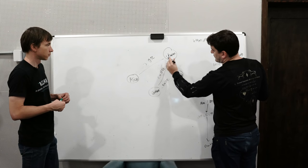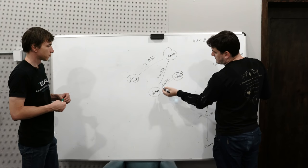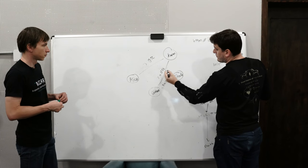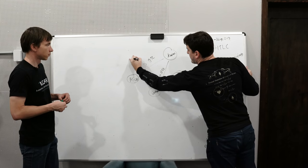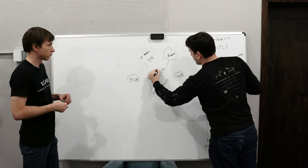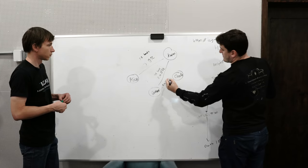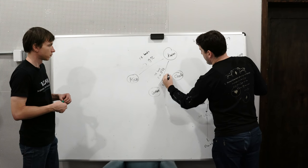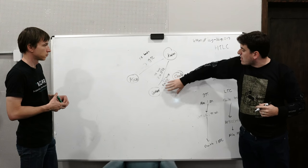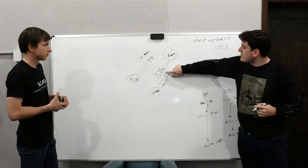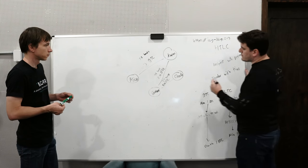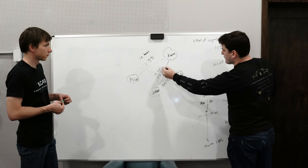Alice locks this up with Kraken. Then Kraken creates the same HTLC with Coinbase using the same hash — this one has a 72-hour timeout. Coinbase creates one with Charlie with a 48-hour timeout, and this last one has a 24-hour timeout. These timeouts have to be staggered because if something goes wrong, Kraken needs enough time — if Coinbase claims the HTLC at the last second — to use that pre-image to go settle on the main chain.